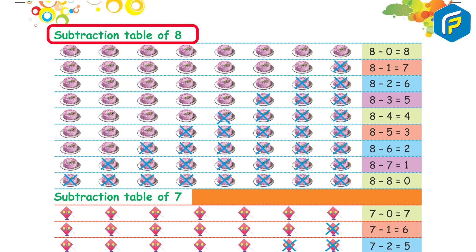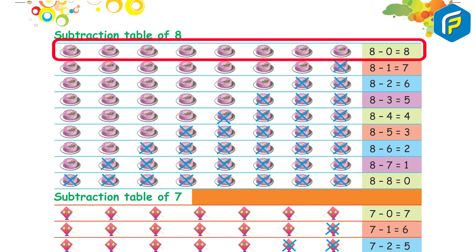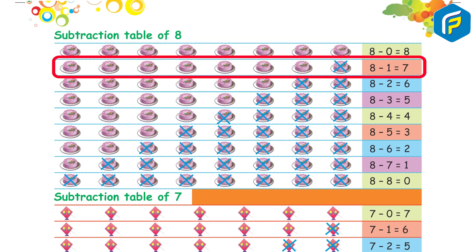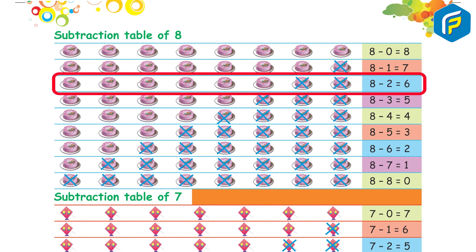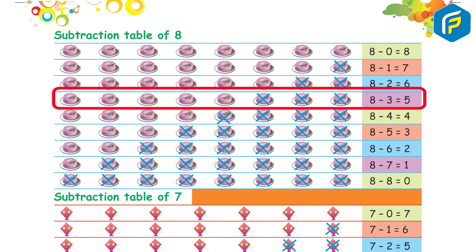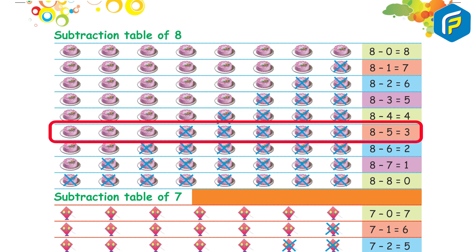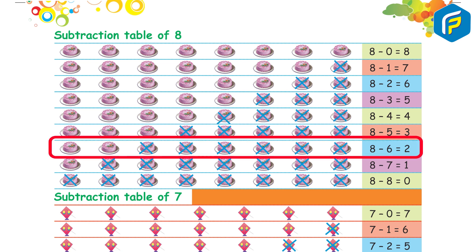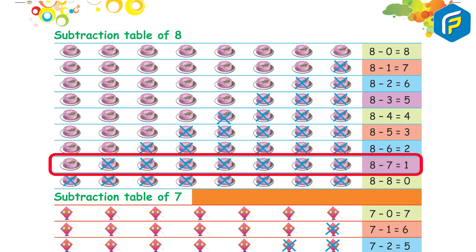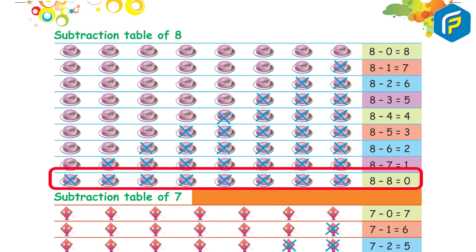Subtraction table of 8: 8 minus 0 is equal to 8. 8 minus 1 is equal to 7. 8 minus 2 is equal to 6. 8 minus 3 is equal to 5. 8 minus 4 is equal to 4. 8 minus 5 is equal to 3. 8 minus 6 is equal to 2. 8 minus 7 is equal to 1. 8 minus 8 is equal to 0.